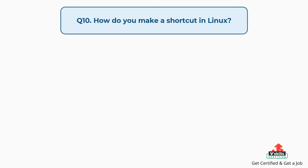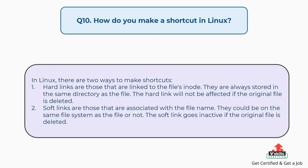Question number ten: how do you make a shortcut in Linux? There are two ways to make shortcuts. First, hard links are those linked to the file's inode; they are always stored in the same directory as the file, and will not be affected if the original file is deleted. Second, soft links are associated with the file name; the soft link goes inactive if the original file is deleted.